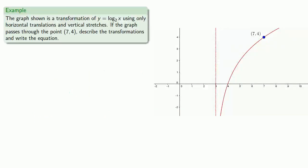So, for example, the graph shown is a transformation of log to base 2 of x using only horizontal translations and vertical stretches. If the graph passes through the point (7, 4), describe the transformations and write the equation.